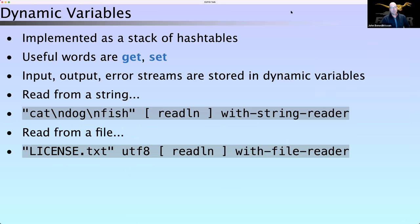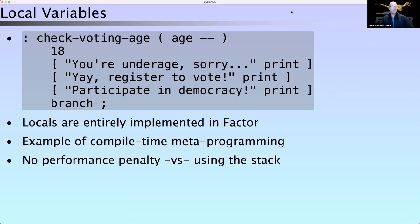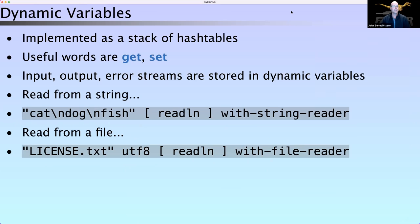Dynamic variables are another feature that enables building and solving problems. We have this notion of getting a variable and setting a variable, and we use that in a lot of places. One important use is input and output streams — it allows us to write a word like `read-line` and then not care, with a small asterisk, whether it acts upon a string we read from or a file we read from.